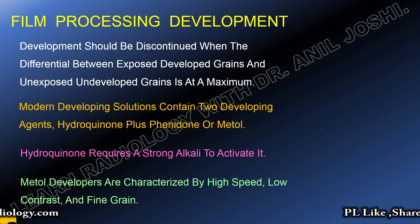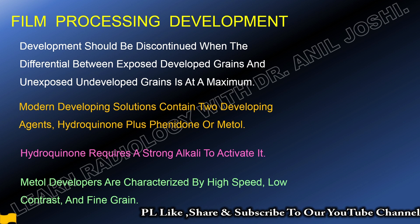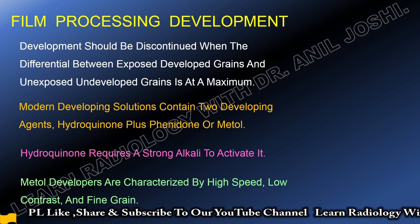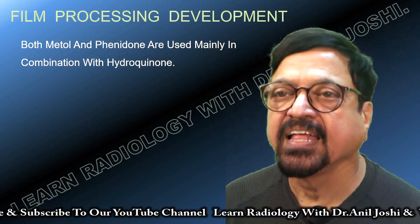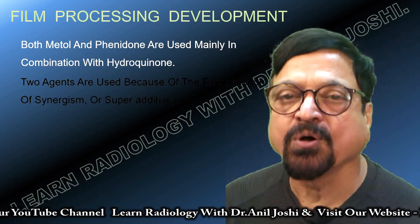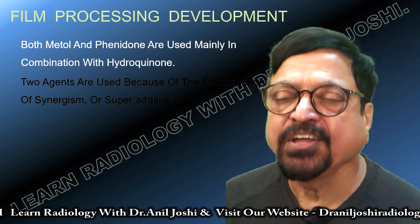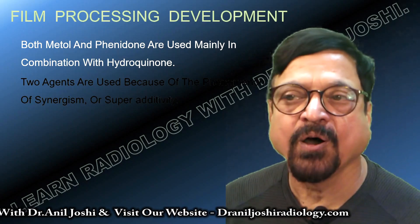In film processing, development should be discontinued when the differential between the exposed developed grains and unexposed developed grains is at a maximum. Modern developing solutions contain two developing agents: hydroquinone plus phenidone, or metol — popularly called metol. Hydroquinone requires a strong alkali to activate it. Metol is characterized by high speed, low contrast, and fine grain development. Both metol and phenidone are used mainly in combination with hydroquinone. Two agents are used because of the phenomenon of synergism — where two agents help each other and enhance efficiency through superadditivity.